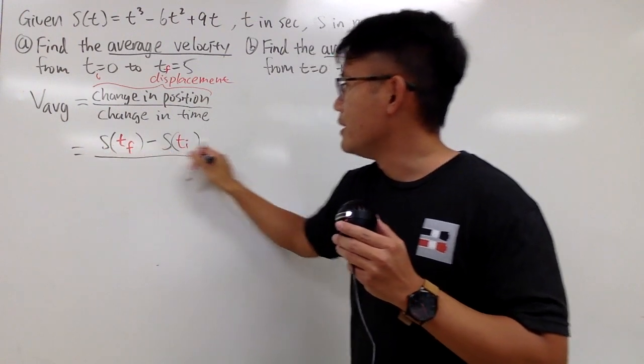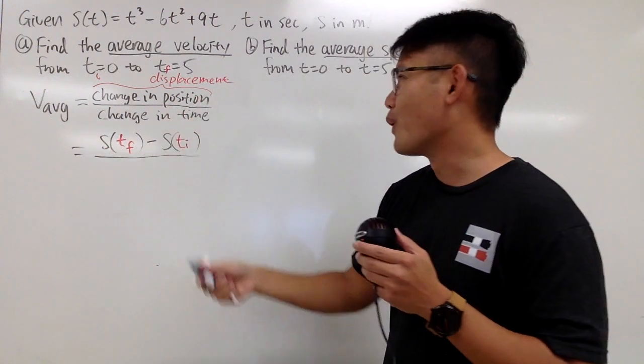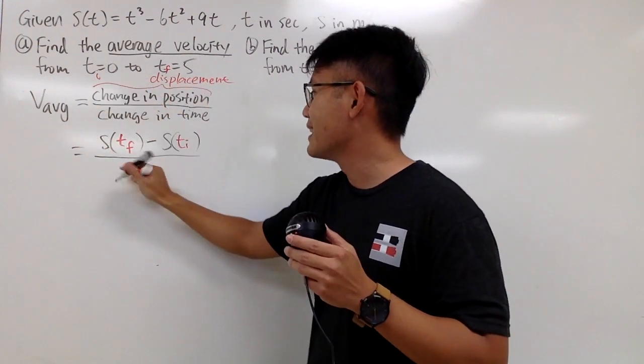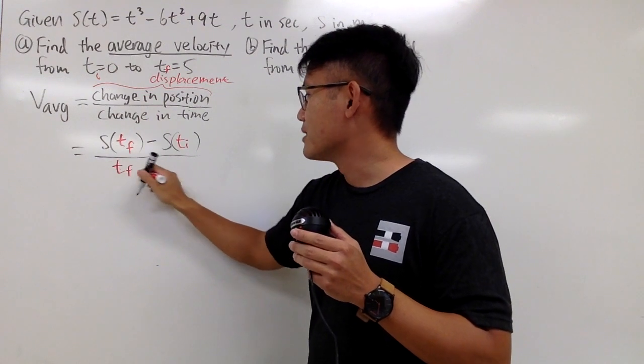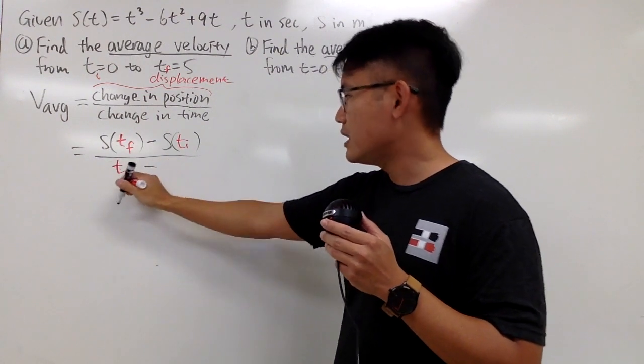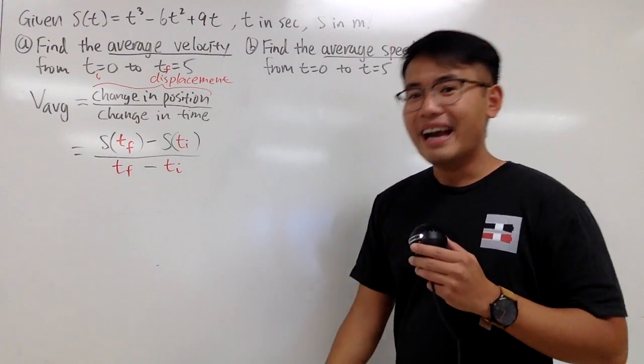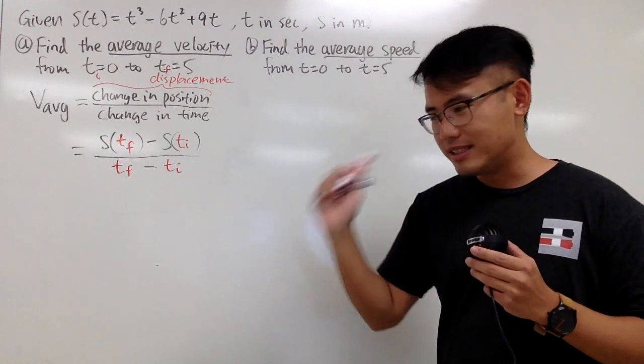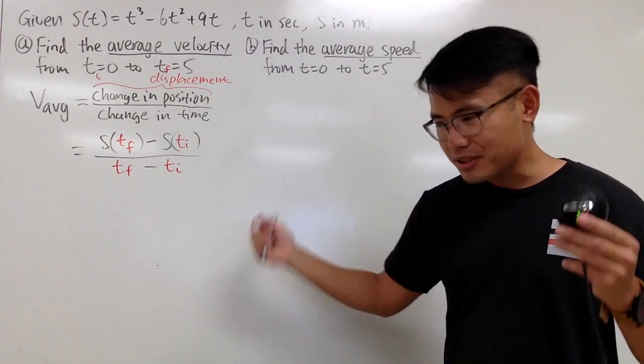And then for the change in time, you can just do this minus that to find out the length of the time interval. So it's just tf minus ti. And notice, this is nothing but the slope formula of the endpoints.